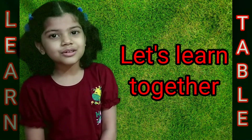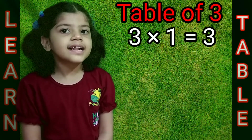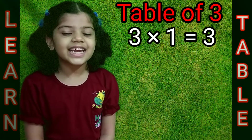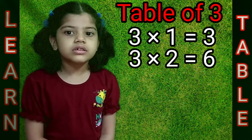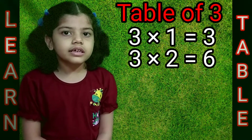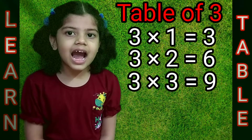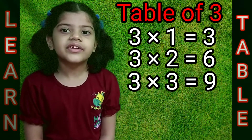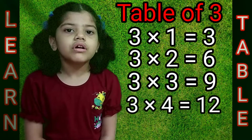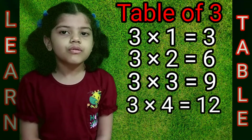Now let's run together. 3, 1, the 3. 3, 1, the 3. 3, 2, the 6. 3, 3, the 9. 3, 4, the 12. 3, 4, the 12.